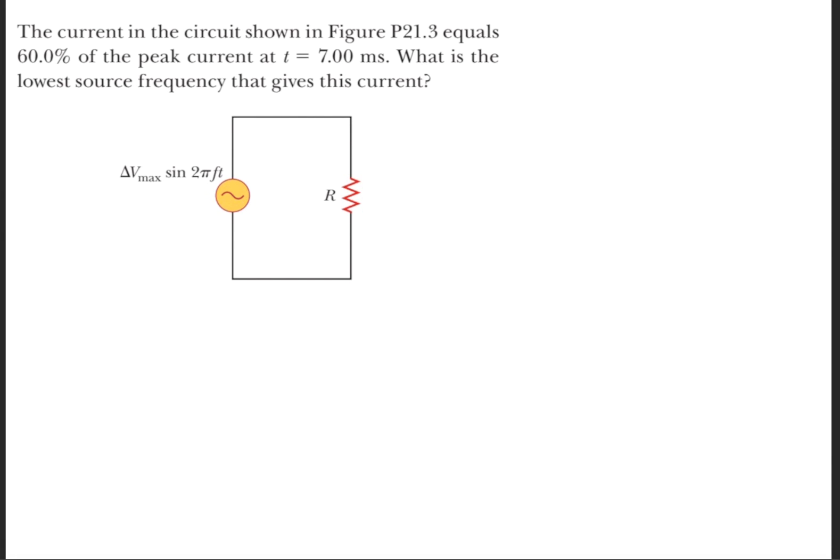To begin solving this question, we first need to convert our calculator into radian mode. Now, according to Ohm's law, we know that the voltage divided by the resistance is equal to the current.